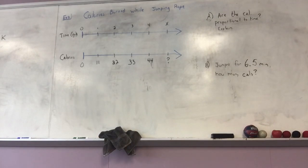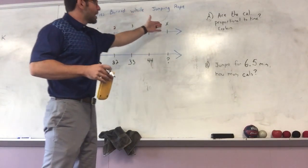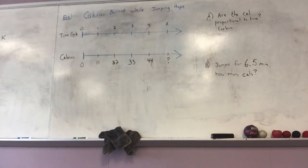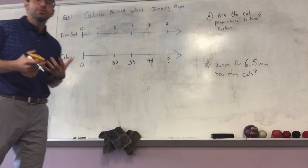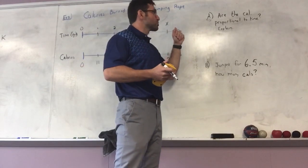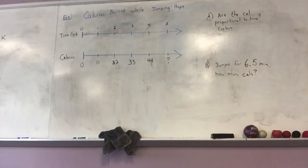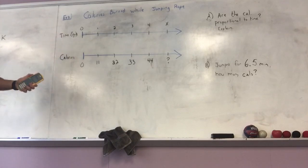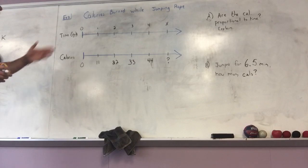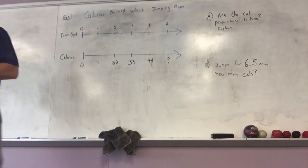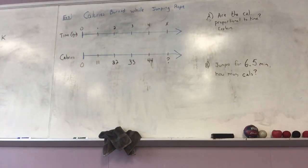I've added on to exercise one — I've put an x and a question mark. This is absolutely important. The two questions it's asking are: are the calories proportional to time, explain; and if you jumped rope for 6.5 minutes, how many calories would you burn? We can make this a table of values: 0 corresponds with 0, 1 with 11, 2 with 22, 3 with 33, 4 with 44, and x with a question mark.